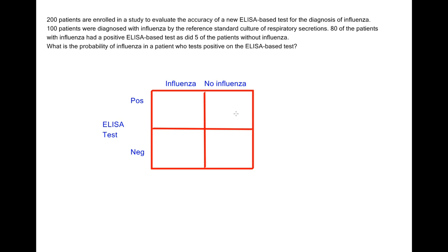100 patients were diagnosed with influenza by the reference standard culture of respiratory secretions. 80 of the patients who had influenza had a positive ELISA-based test, as did five of the patients without influenza. So what is the probability of influenza in a patient who tests positive on this ELISA-based test?